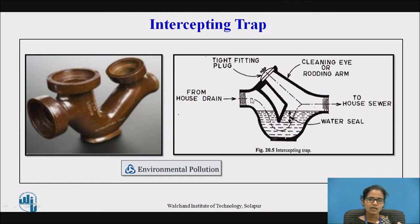A tight-fitting plug is provided at the top, and this is the cleaning eye or rodding arm. Here is the depth of the water seal, which is less than that of the other traps.